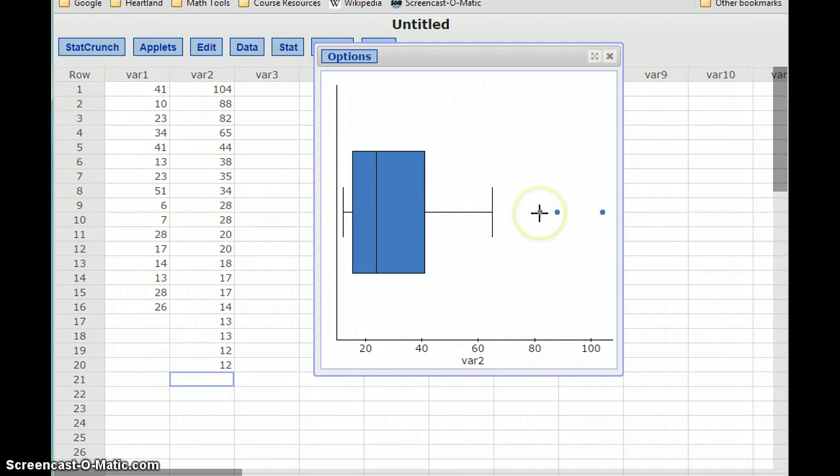So again, since I opted to display outliers using the fences, I get those three points that are separated from the rest of the graph.